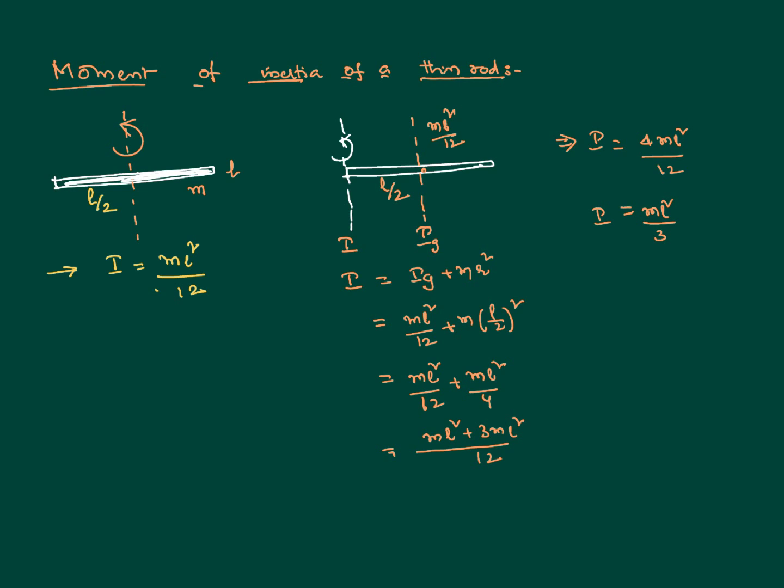That is how we can calculate the moment of inertia of the rod about a different axis. Whenever the axis changes, moment of inertia changes. And if parallel axis theorem and perpendicular axis theorem can be applied, that is the simplest way to solve the problem. Thank you.